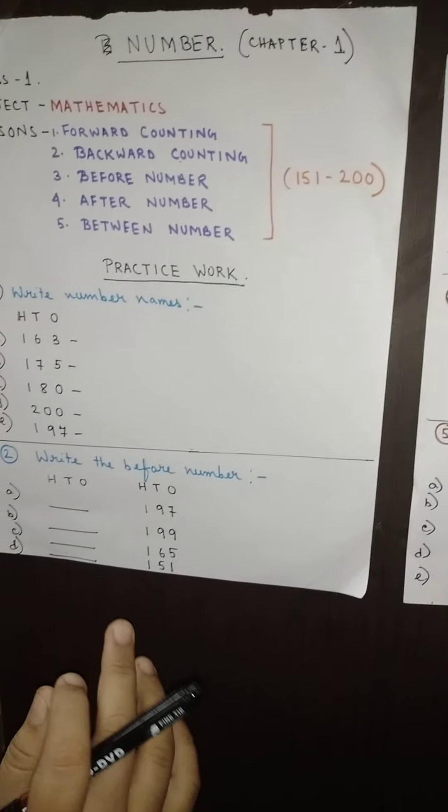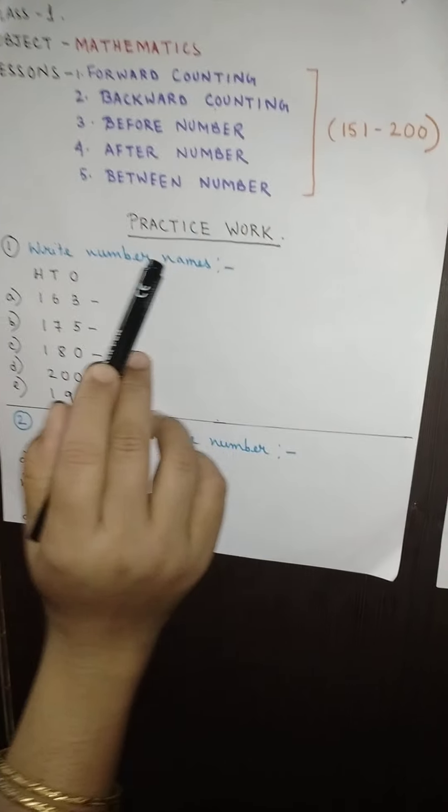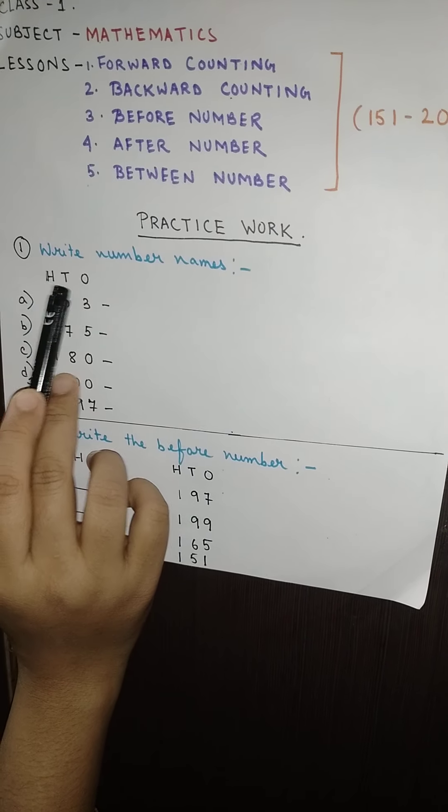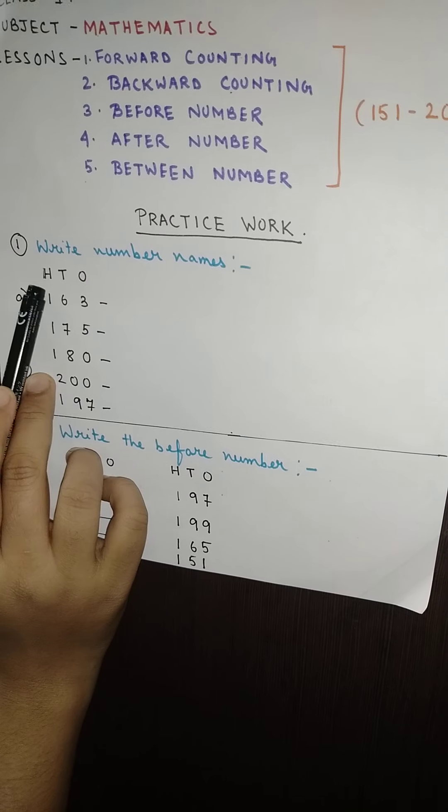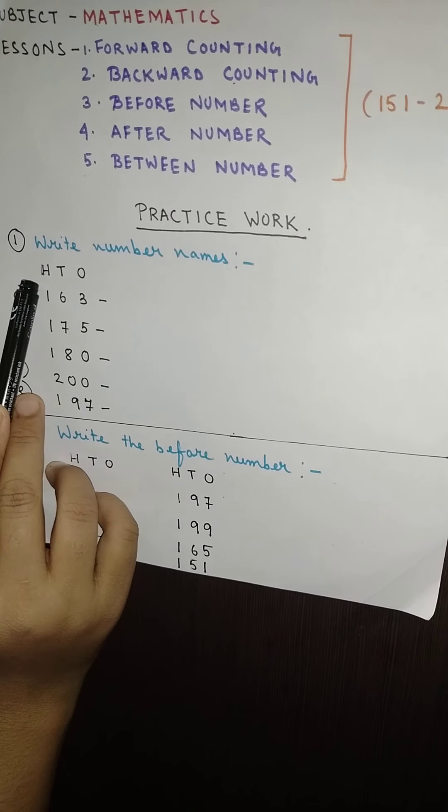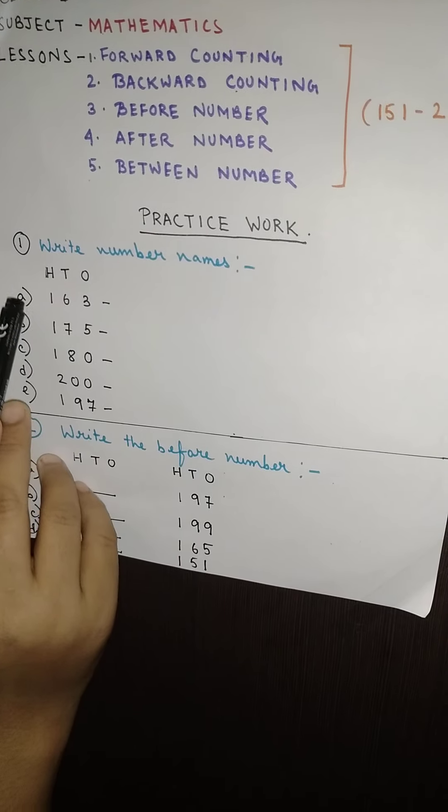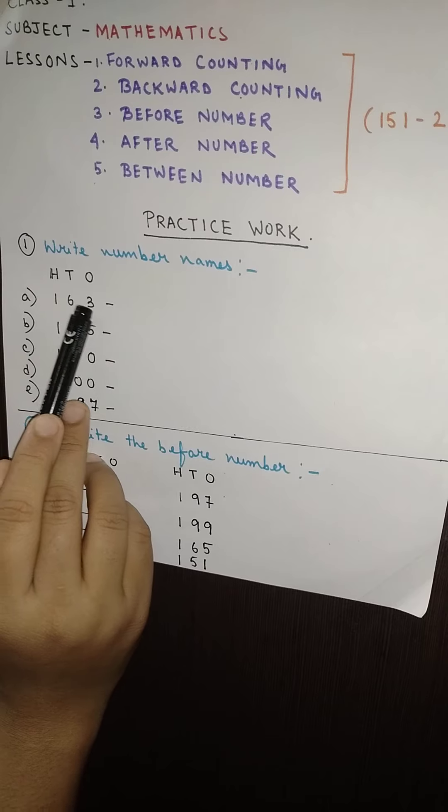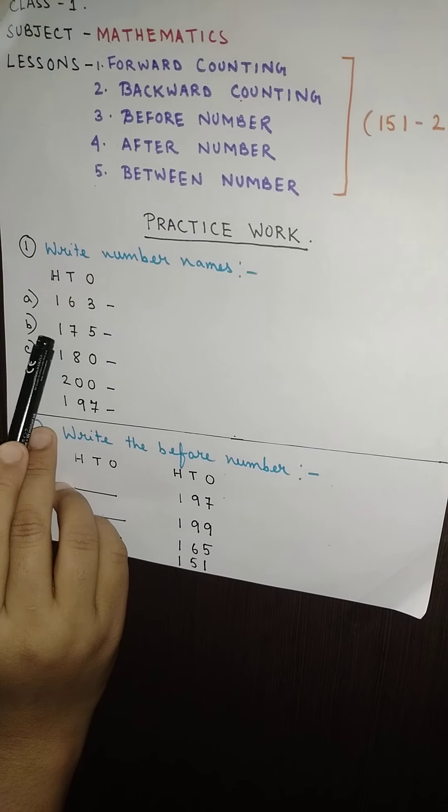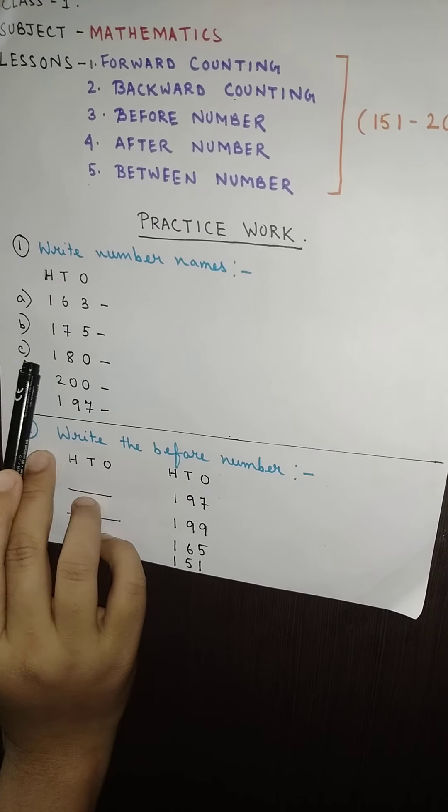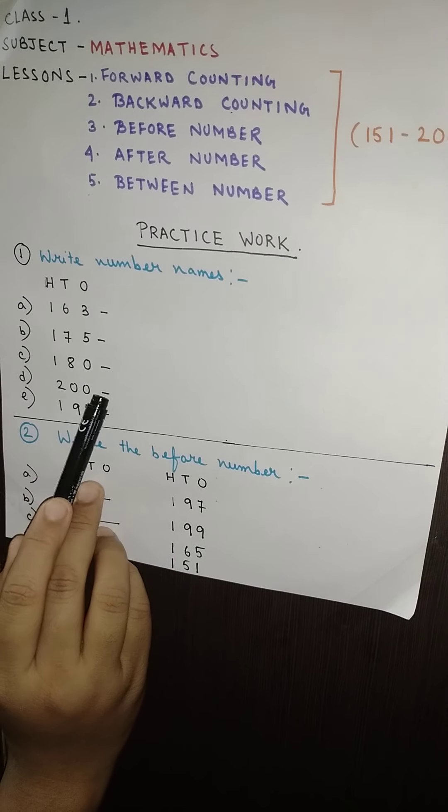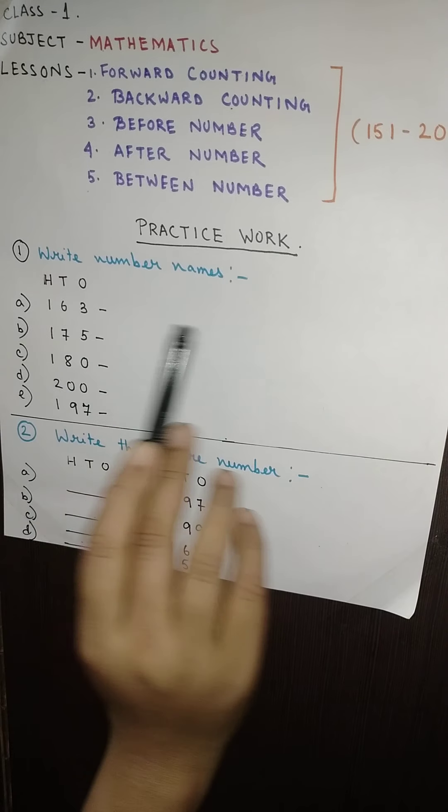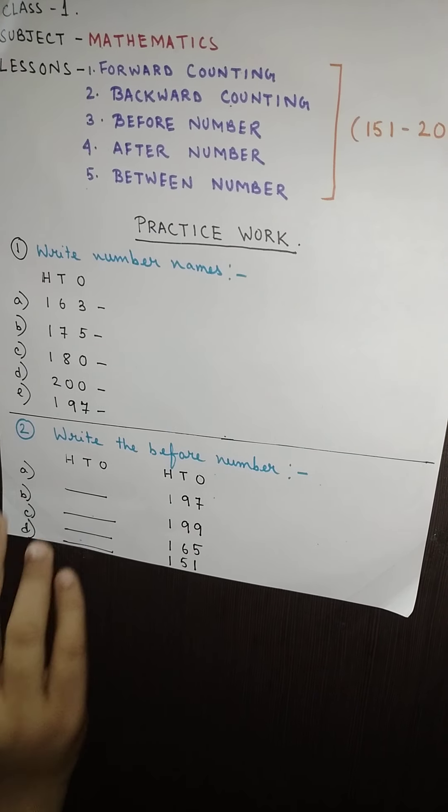Okay, now you can see that under that line you will write number 1: write number names, and you will write H T and O. Once again I want to remind you the meaning of H is hundreds, T is tens, and O is ones. And here you can see I have written A, B, C, D, and E. So number A is 163, number B is 175, number C is 180, number D is 200, and number E is 197. So what you will do, you will write these numbers and beside you will be writing their number names.